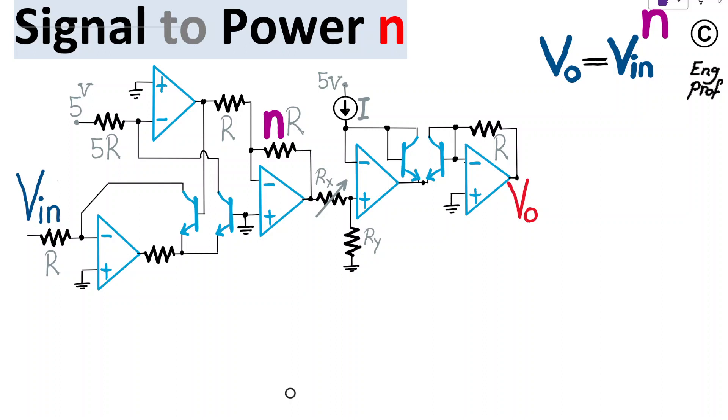How can we raise an analog signal to power n as shown here? So basically v-in comes in as shown here at the input of the circuit as a signal, as a voltage, and then we want to raise that to power n. As shown here, n is a positive number. It doesn't need to be an integer. So how is that possible?